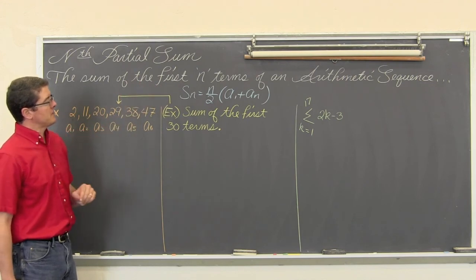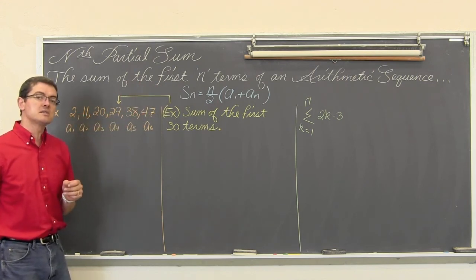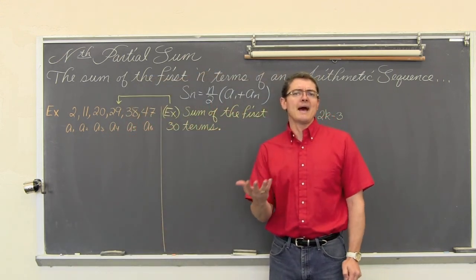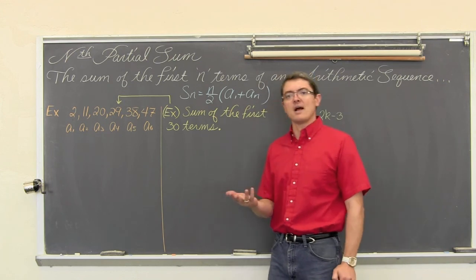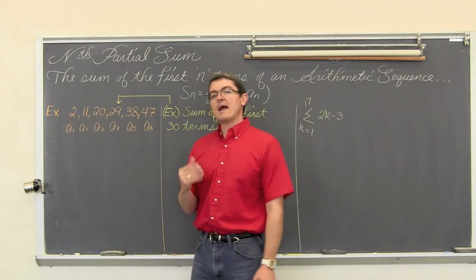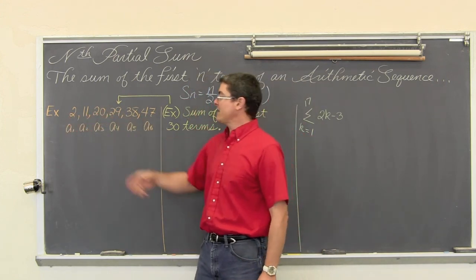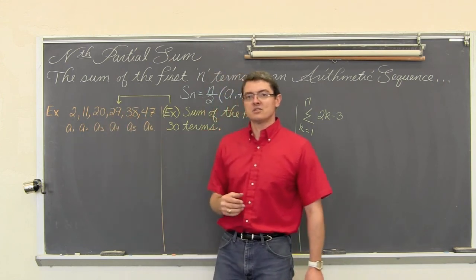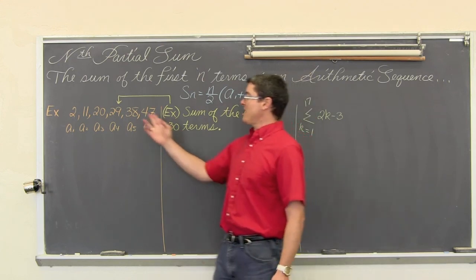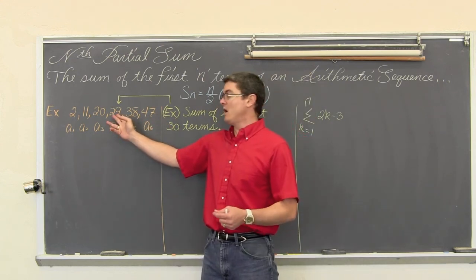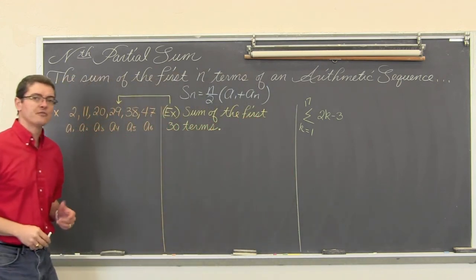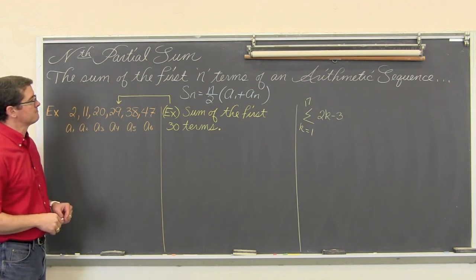Again with arithmetic sequences you recognize that by looking at your list of numbers and observing that there is a constant addition. You can be adding by a negative number which will look like subtraction, but there is a constant addition. So we are going from 2 to 11 we are adding by 9. From 11 to 20 we are again adding by 9. Or you could say it in math terms, a sub n minus a sub n minus 1 is a constant difference. So back subtract and make sure you have the same difference for all of your terms in the sequence.